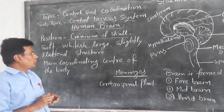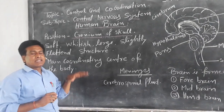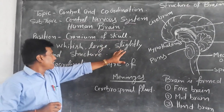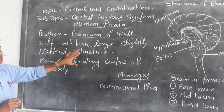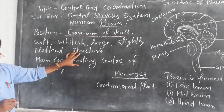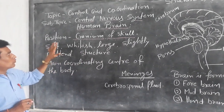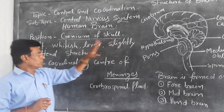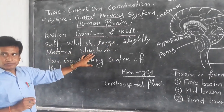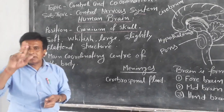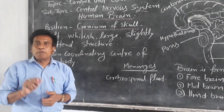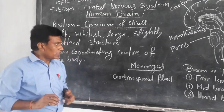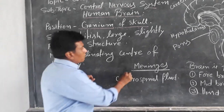Actually, the human brain is a soft, whitish, large-sized, slightly flattened structure. And it is covered by a three-layered membrane. That three-layered membrane is called meninges.